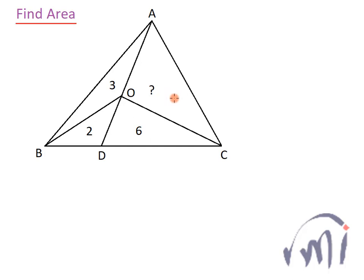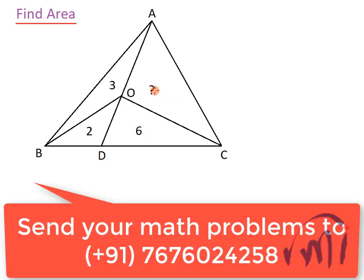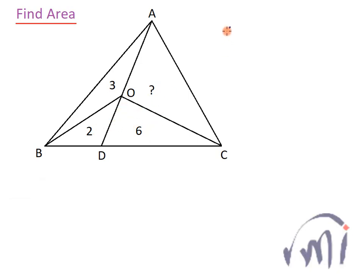Here we have a problem which we need to solve. We have to find the area of AOC where the areas of ABO, BDO, and DCO are given. The ratio of the areas of DOC and BDO will be equal to the ratio of area of AOC and area of ABO, which is 3.